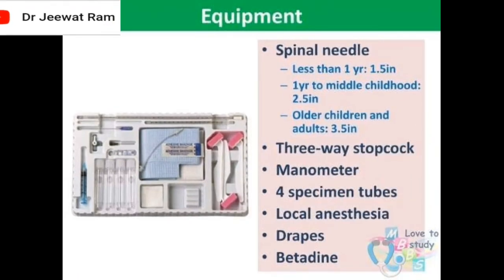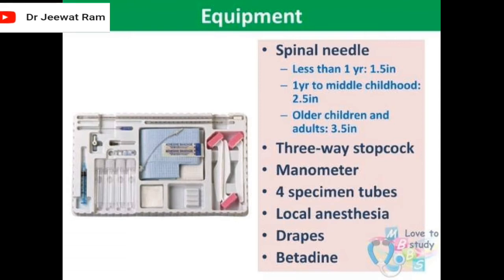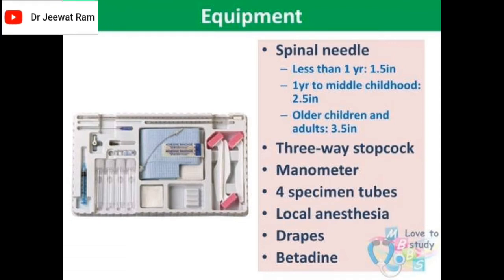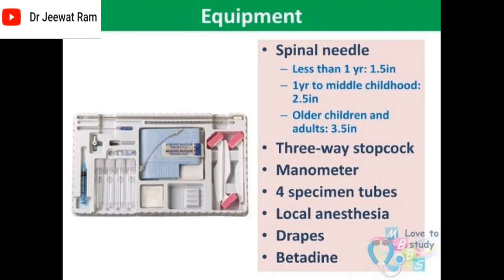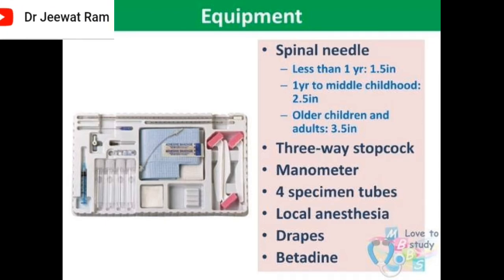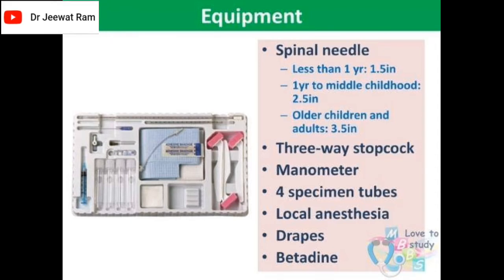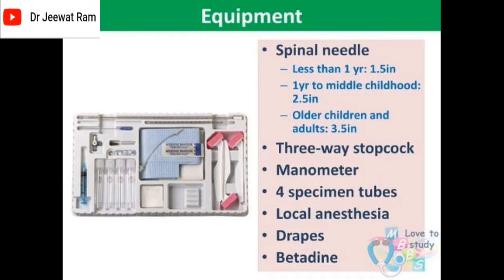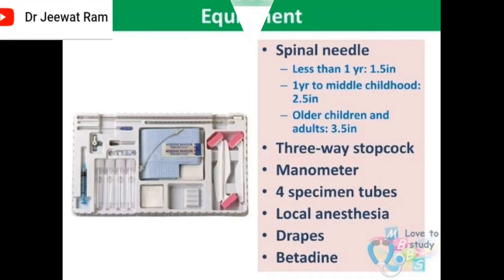Equipment for lumbar puncture: spinal needle — 1.5 inches for less than 1 year of age, 2.5 inches for 1 year to middle childhood, 3.5 inches for older children and adults. Also required: 3-way stopcock, manometer, 5 specimen tubes, local anesthesia, drapes, and betadine.